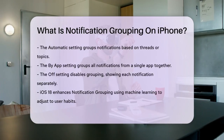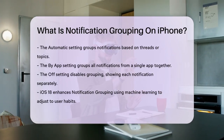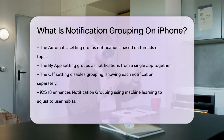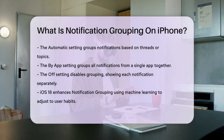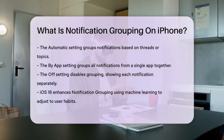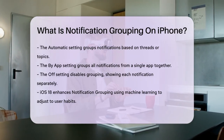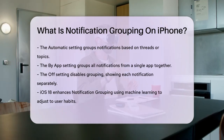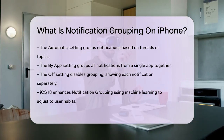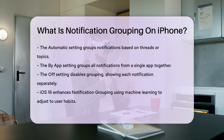You have three options for notification grouping. Automatic — this is the default setting, where notifications are intelligently grouped by threads, topics, or other criteria set by the app. By App — all notifications from the app are grouped together regardless of their content. Off — this setting turns off notification grouping, so each notification appears separately.